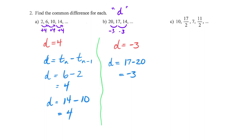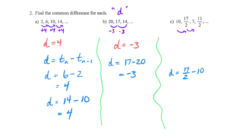I'd like you to go through and try to figure out what D is on the sequence given in C. Pause it now. Okay, we're back. As soon as we went to fractions, some people may have found that a little more difficult — the idea of what we're doing to go from term to term wasn't so obvious. So what could we do? We go back and say I'm going to calculate D. I'm going to take 17 halves and subtract the number that came before it.